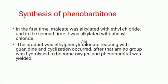Synthesis of Phenobarbitone: In the first step, malonate was alkylated with ethyl chloride, and in the second step it was alkylated with phenyl chloride. The product, ethyl phenyl malonate, was reacted with urea and cyclization occurred. After that, the amino group was hydrolyzed to become an oxygen and Phenobarbitone was yielded.